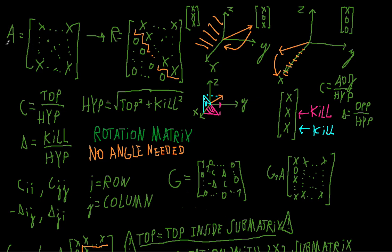Suppose I have a matrix A and I want to do a QR decomposition of it using the Givens rotation. What I want in the end is this upper triangular matrix R, which has zeros below the diagonal. Above the diagonal you can have zeros but you don't need to — they are denoted by these strange x's, which can be zero but don't have to be.